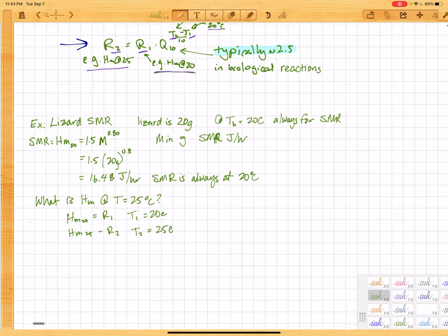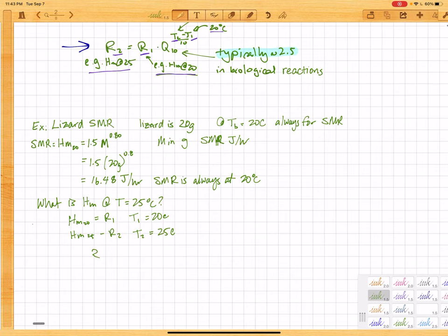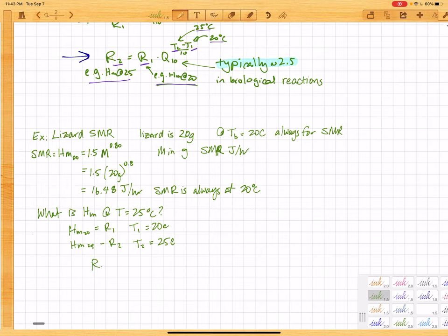So then we just plug in R2. We have R2 equals R1 times Q10 to the T2 minus T1 over 10 power.